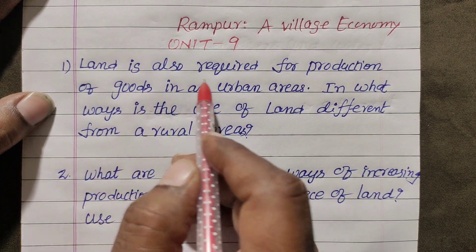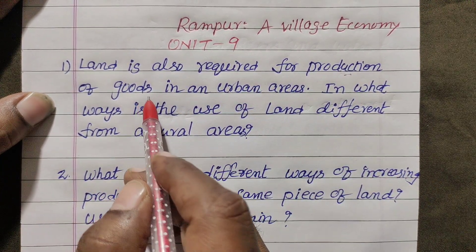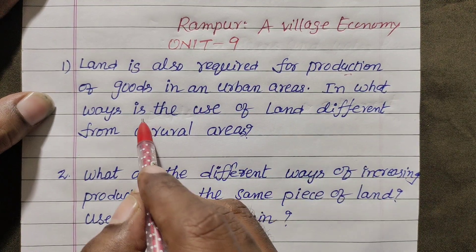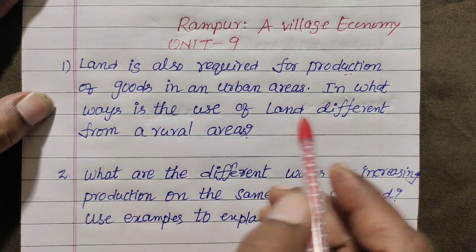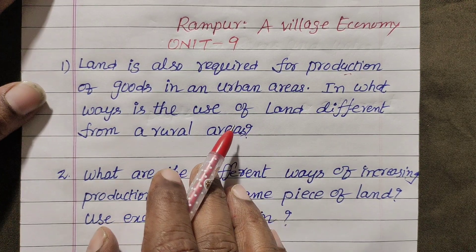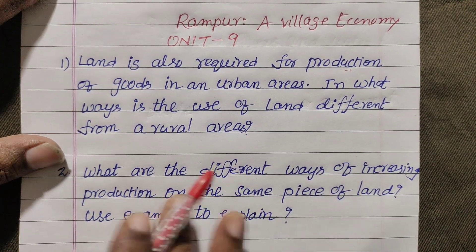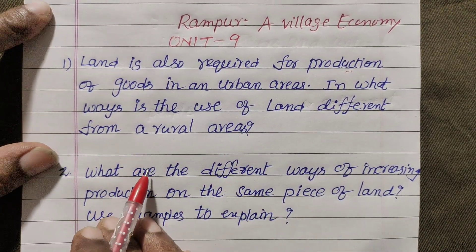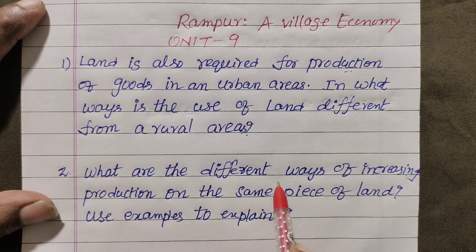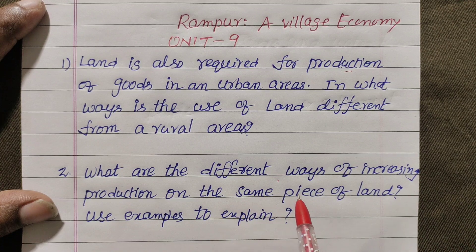Land is also required for production of goods in our urban areas. In what ways is the use of land different from rural areas? Explain the urban area and rural area differences. Second question: what are the different ways of increasing production on the same piece of land? Use examples to explain.